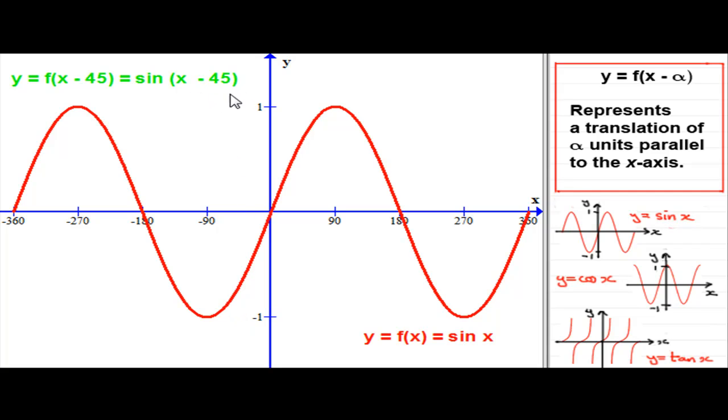Now if you look at the x minus 45, and you compare it to what we have over here, x minus α, you can see that α is 45. And what that does is it represents a translation of 45 units, 45 degrees in this case, parallel to the x-axis. So we need to shift this graph of sin x 45 degrees to the right.